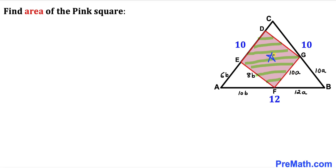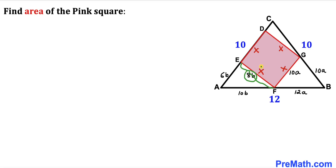Now let's focus on the pink square DEFG. All four side lengths are equal, so we call each side X. Observing side EF: we established it equals 8B, and it also equals X. So we can equate them: 8B = X.